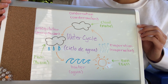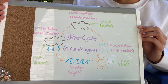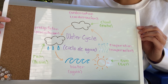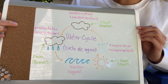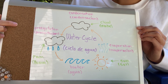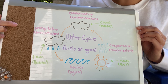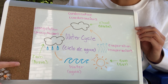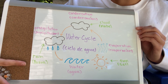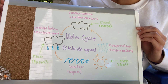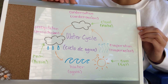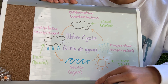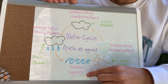When the cloud is filled with enough water it creates precipitation, precipitación, which is rain, lluvia. The rain falls back onto the ground in the form of agua.